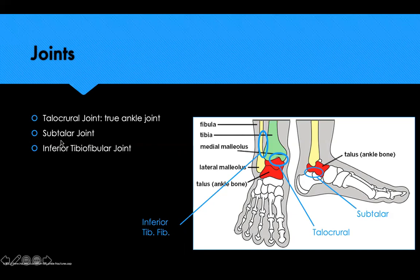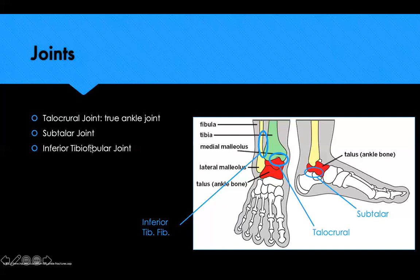The subtalar joint — 'sub' meaning below, 'talar' referring to the talus — is directly below the talus bone. Looking at the right-hand side of the diagram, we can see the talus in red and the calcaneus directly below it in white. The calcaneus is a lot larger compared to the talus, but that articulation between the talus and calcaneus is what allows us to do inversion and eversion of the ankle. The last joint we'll mention is the inferior tibial-fibular joint, where the inferior aspects of the tibia and fibula come together and articulate with one another.